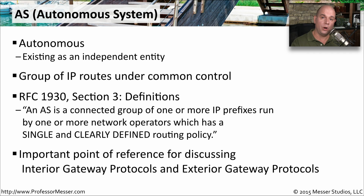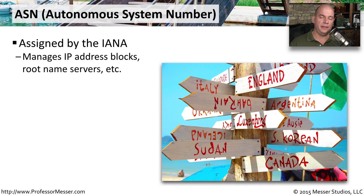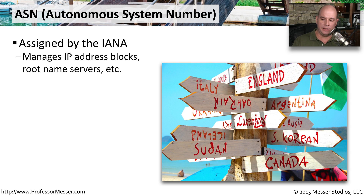When you start working with routing protocols, the protocols themselves may be referencing one AS versus another. For all of these ISPs to be able to communicate with each other, they need to be assigned a unique AS — a unique autonomous system number. That ASN is assigned by the Internet Assigned Numbers Authority, or the IANA.